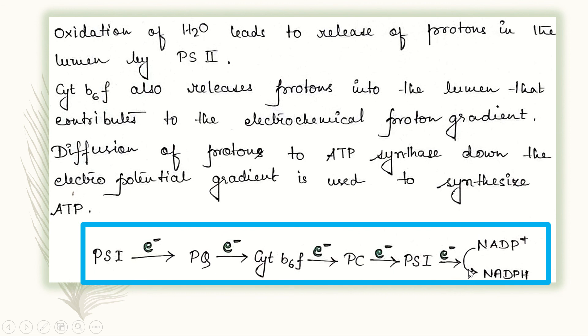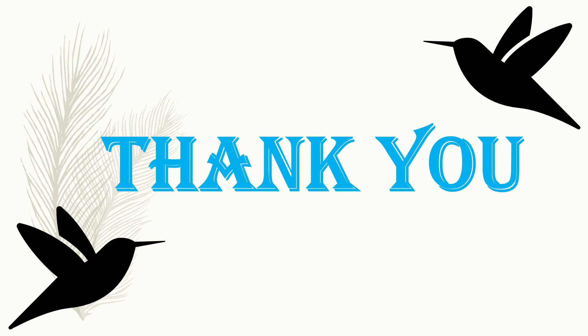So, this is a simplified path of electron that is ultimately reducing NADP to NADPH. This is how we complete our discussion on cyclic and non-cyclic electron transfer. In case you have any confusion or doubt, please feel free to ask me in the comment section. And I will try my level best to solve your problems. Thank you so much and hope to see you soon in our next video. Thank you.